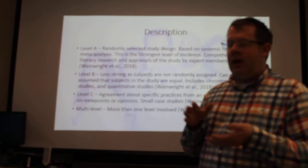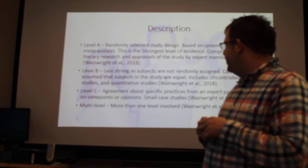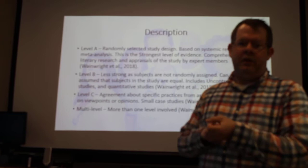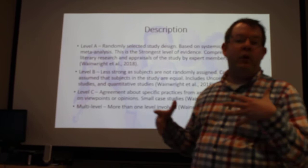Level B is less strong; the subjects are not random. Even though you may have a study, there are some predetermining factors that make the data not as strong. Level C is going to be agreement about practices, but it's a professional opinion or based on expert knowledge — there may not necessarily be any empirical data to back it up. A multi-level approach is where we mix more than one level of study.